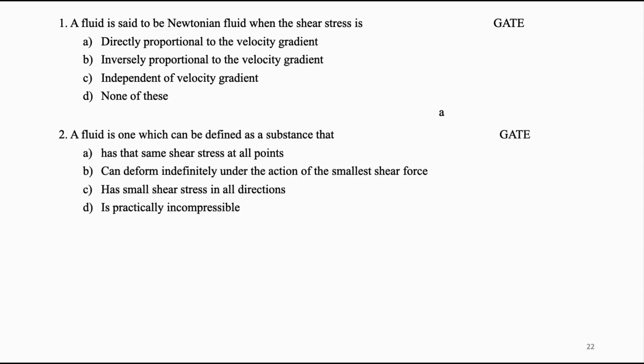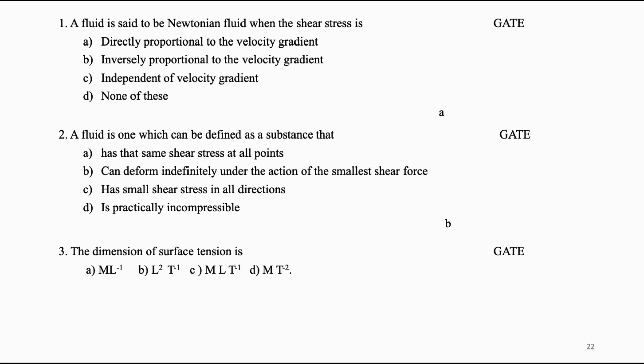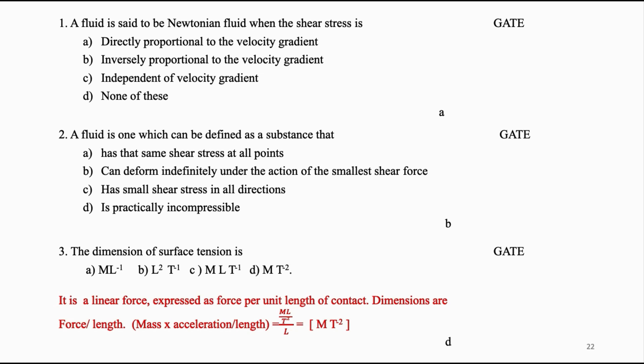A fluid is one which: (A) has the same shear stress at all points, (B) can deform indefinitely under the action of even a small shear stress, (C) has small shear stress in all directions, (D) is practically incompressible. Answer is B. The dimension of surface tension is: (A) ML⁻¹, (B) L²T⁻¹, (C) MLT⁻¹, (D) MT⁻². Surface tension is a linear force expressed as force per unit length of contact, so dimensions are MT⁻². Answer is D.